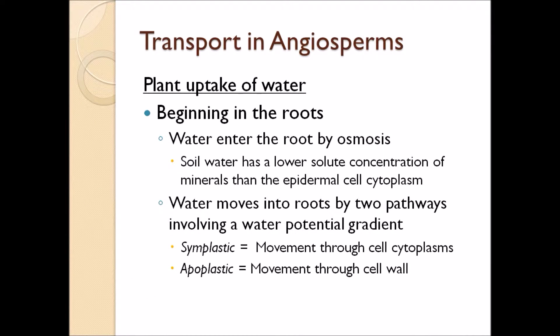Beginning in the roots, water enters the roots by osmosis. Normally, there are more minerals in the roots than in the leaves, so water goes down its solute concentration gradient, moving into the roots. They can enter by two pathways: the symplastic pathway and the apoplastic pathway — you get points for knowing both of these. The symplastic pathway is when water moves through cytoplasms, and the apoplastic pathway is through the cell wall. Let's look at that in more detail.